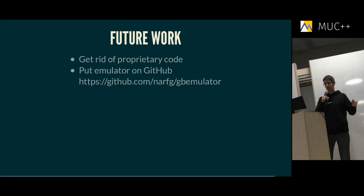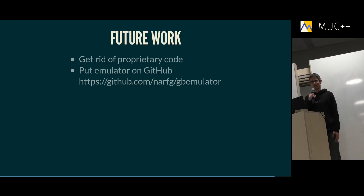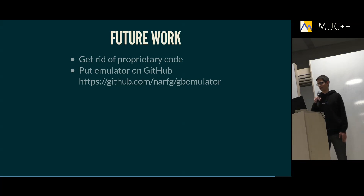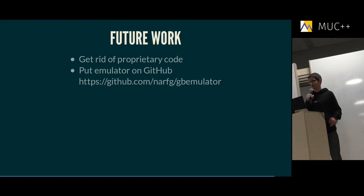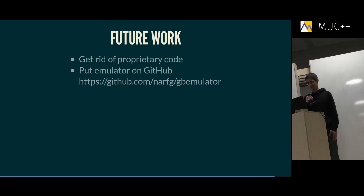I want to put my emulator on GitHub — I already created a repository, though right now it only contains a README. I promise I'll put the code there within maybe a week. I realized I first need to get rid of some proprietary code, mainly the boot ROM and some other things, because my unit tests write out valid ROMs that also include the Gameboy logo, and I don't think I'm allowed to do that. Once that's fixed, I'll put the code up.